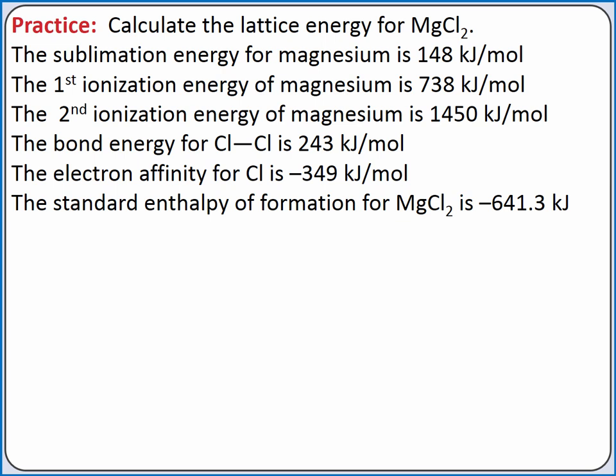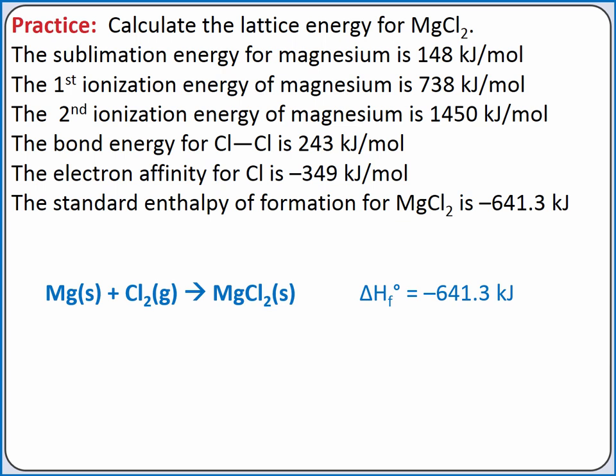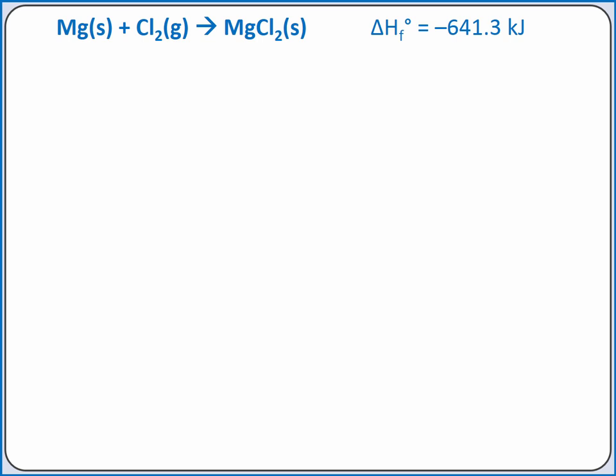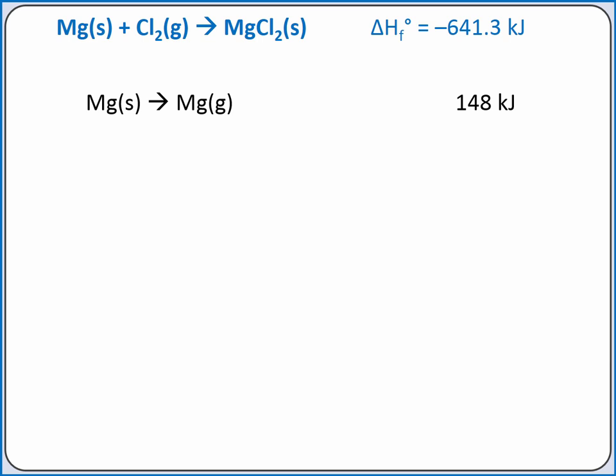Let's practice calculating the lattice energy for magnesium chloride. We're given the sublimation energy for magnesium, the first and second ionization energies of magnesium, the bond energy for the chlorine-chlorine single bond, the electron affinity of chlorine, and the standard enthalpy of formation for magnesium chloride. We'll start by writing the equation for the standard enthalpy of formation for magnesium chloride. The standard state of magnesium metal is a solid, and for chlorine it is a diatomic gas, Cl₂. We have coefficients of 1 to balance the equation.